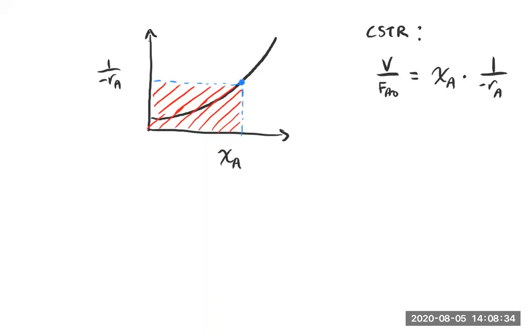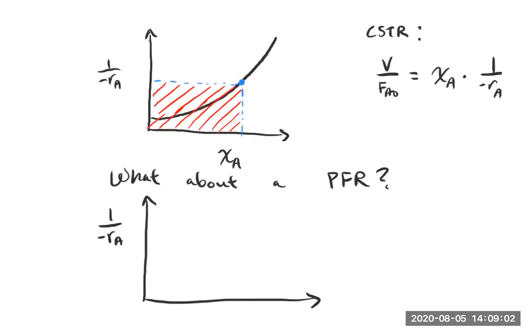So what about a PFR? What happens in this case? So let's go ahead and draw the plot again. We'll have 1 over minus r_A. I could restore it. All right.